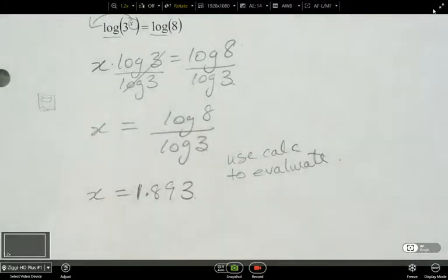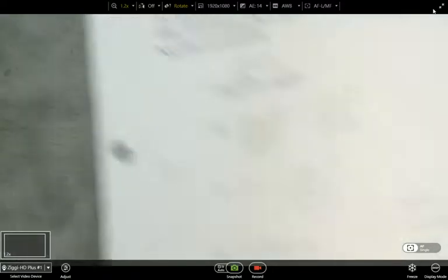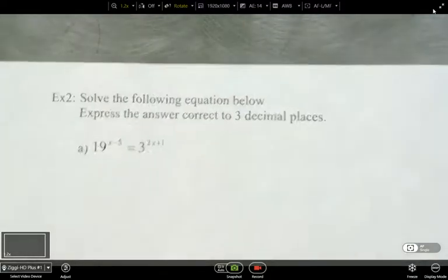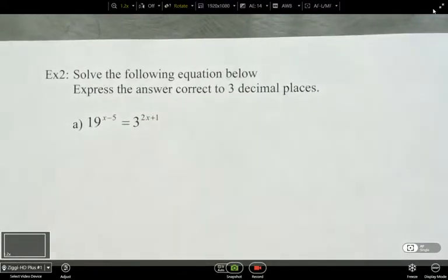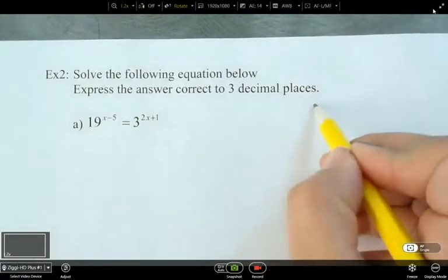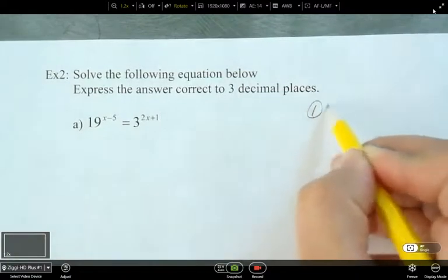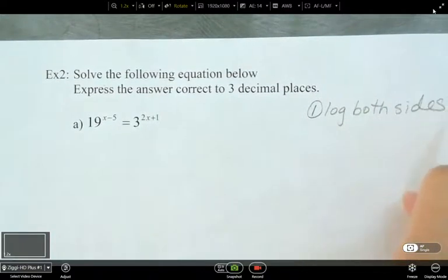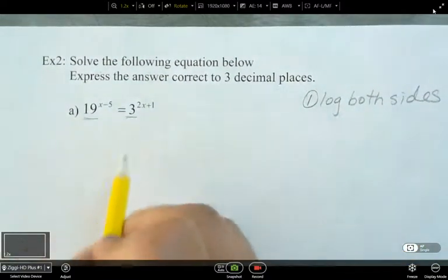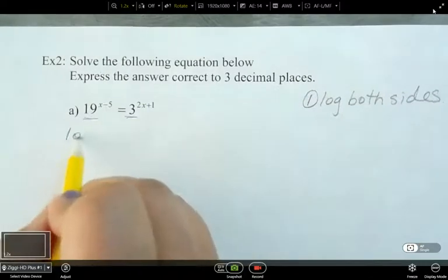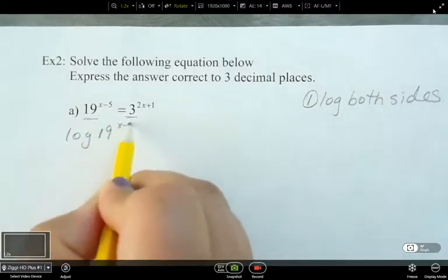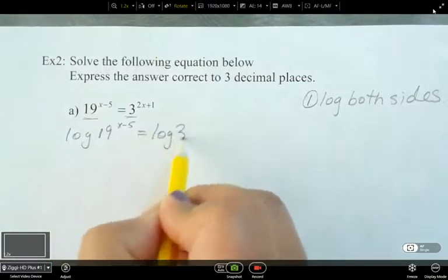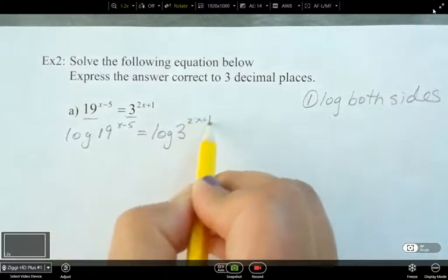So now there's a couple more questions on the other side here. Just some more practice with bases that are not the same. So what are we going to do in this case? We need to log both sides because they are different bases. So log 19^(x-5) and then log 3^(2x+1). Those are my exponents.